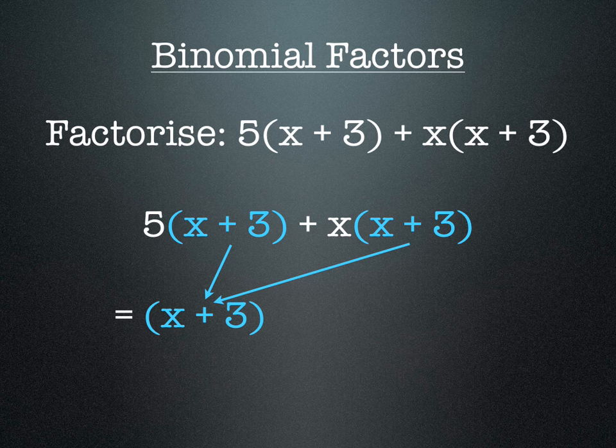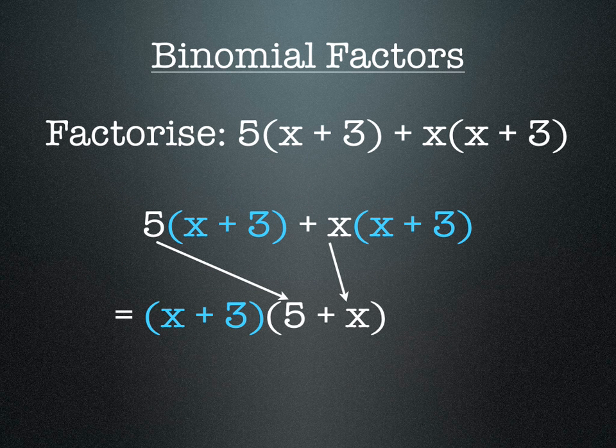In the second set of brackets is the 5 and the x, what's left behind after we take out (x + 3) from both terms. An expression with binomial factors ends up in two brackets: the first brackets are the binomial factors, the second brackets is what's left behind after we've taken out that binomial factor.